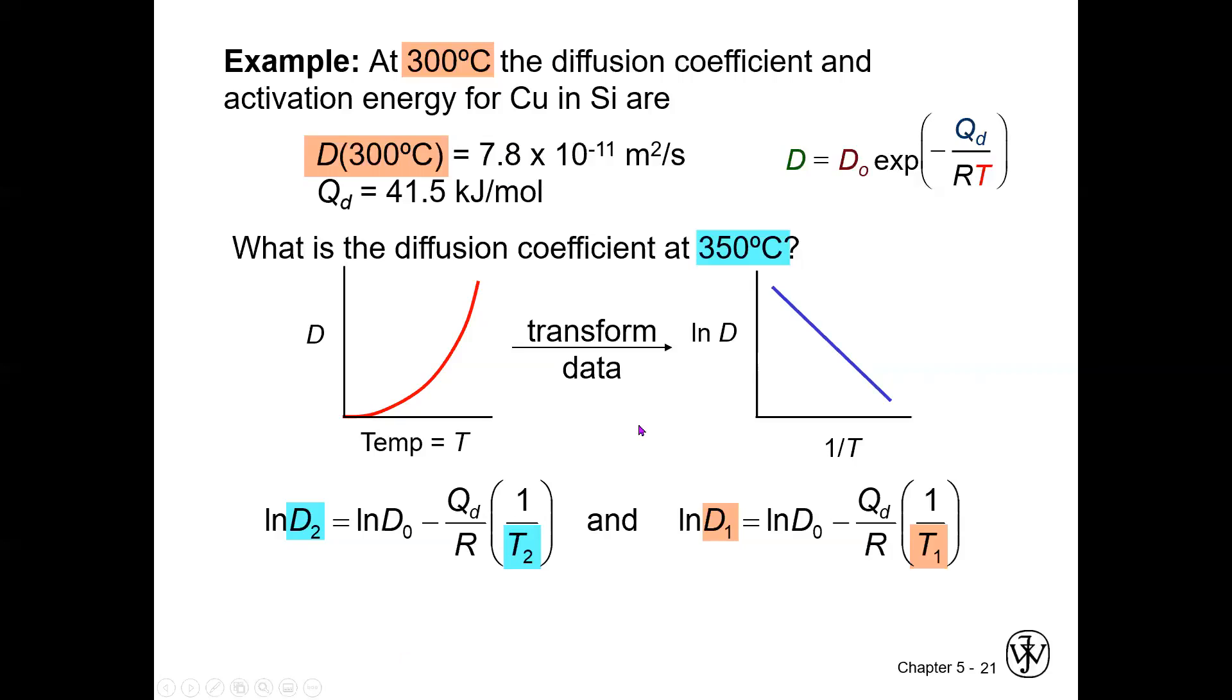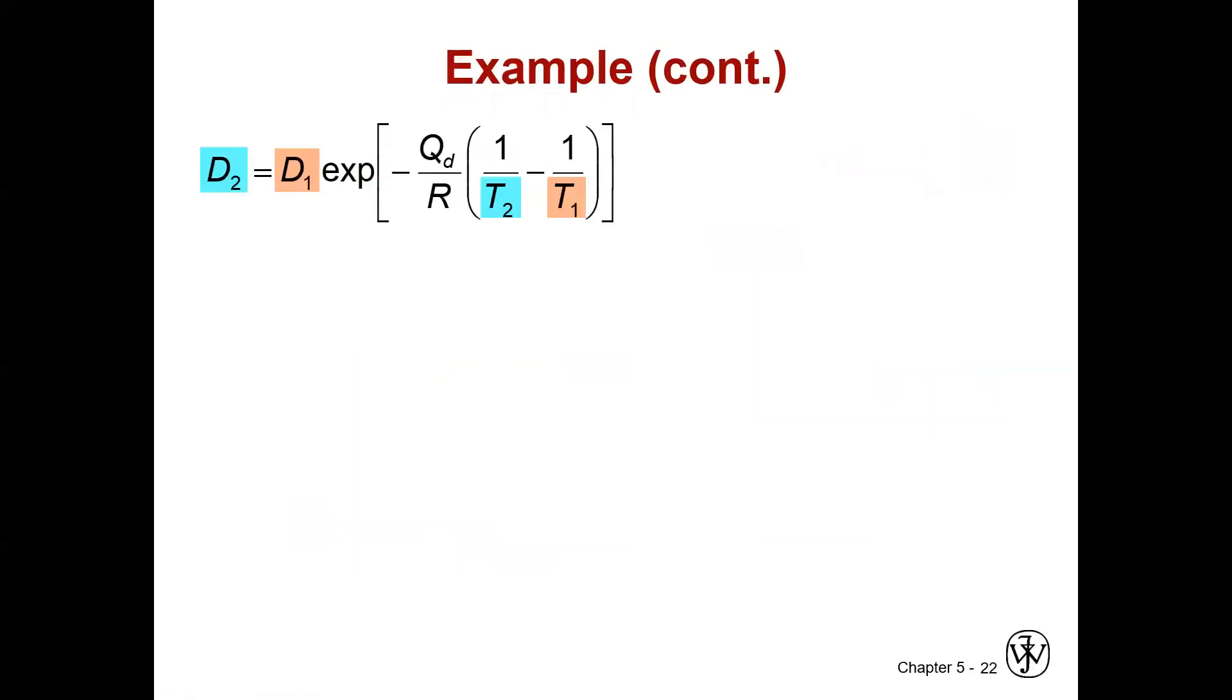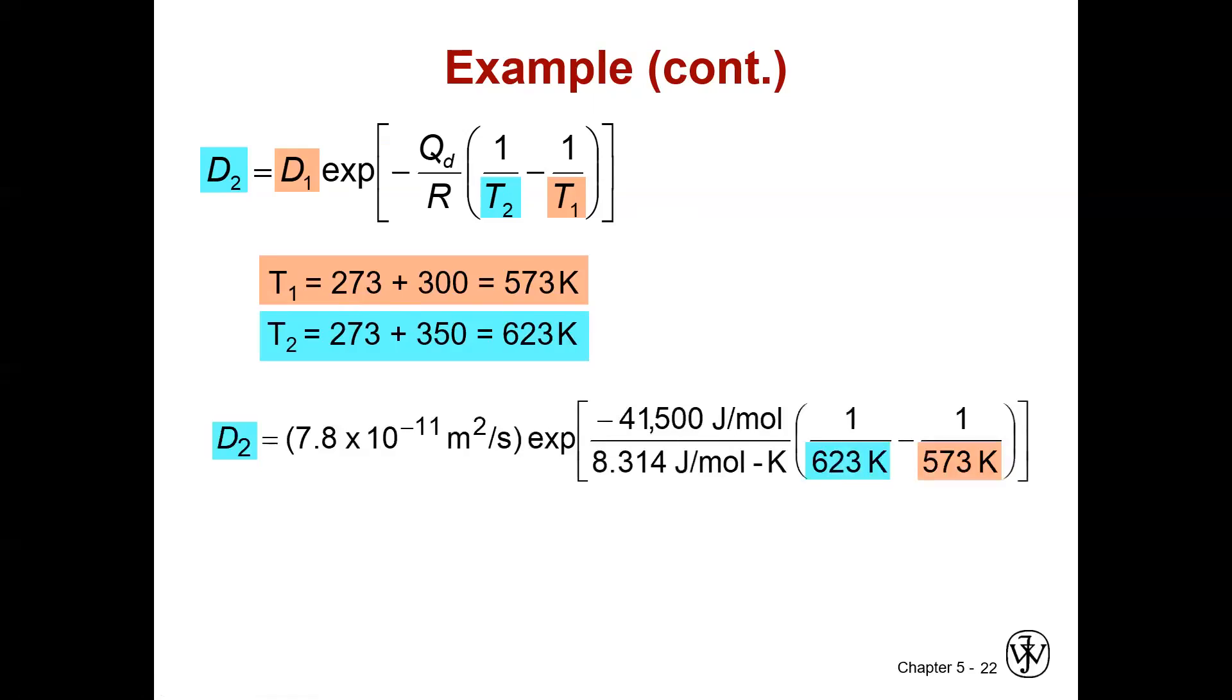So the first thing we're going to do here is we're going to transform our original equation by taking the natural log of both sides. Then we're going to subtract the two equations from each other. And now we've got one equation that will give us the diffusivity at some temperature if we know the diffusivity at a different temperature. So I can just plug straight into this equation. Make sure you're in Kelvin.